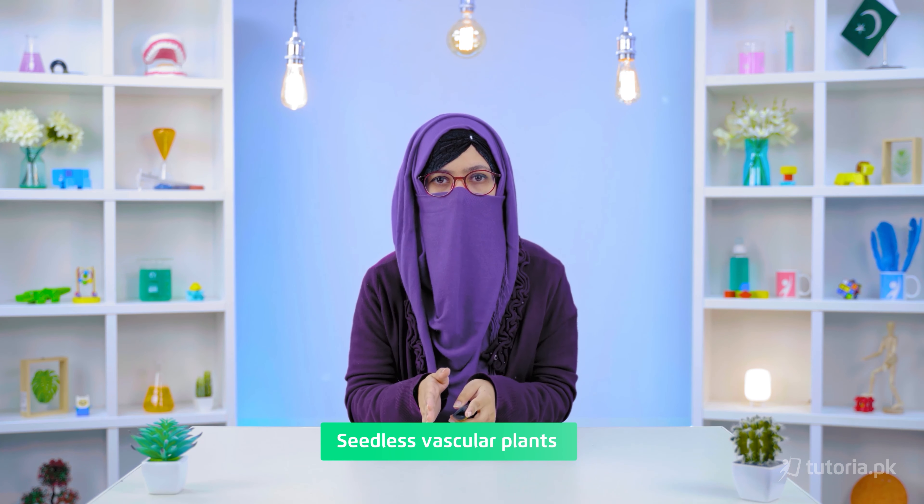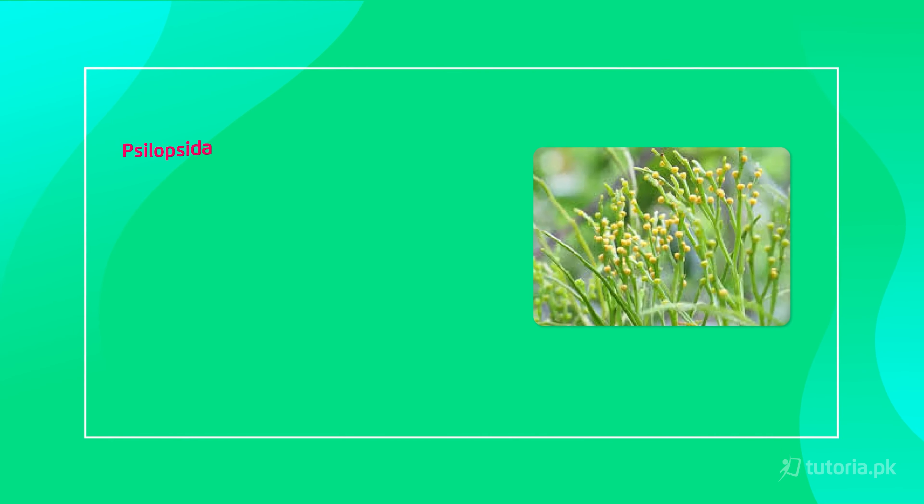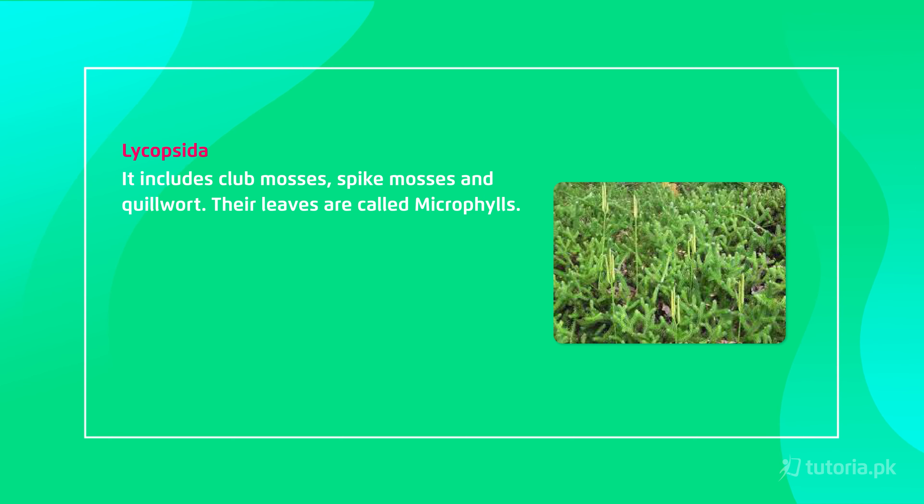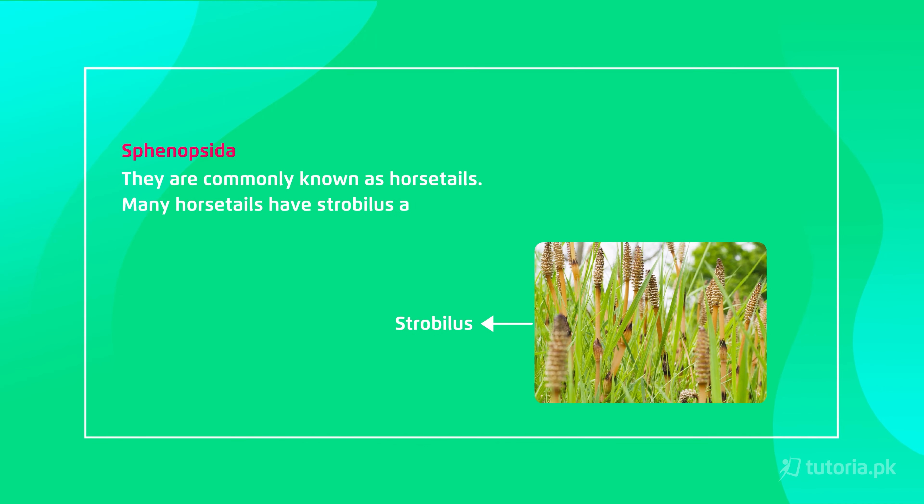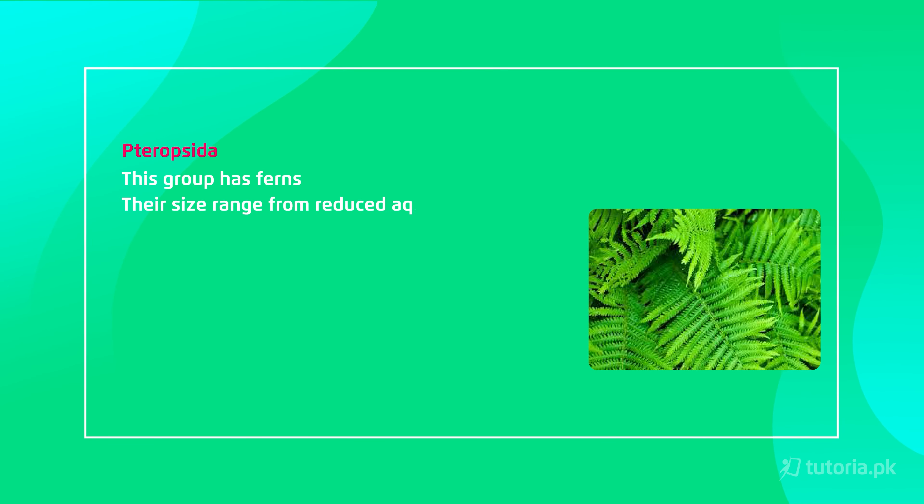Now let's talk about seedless vascular plants. Bryophytes were small in size because they had to take nutrients directly from the environment and were dependent on water. As plants evolved, they developed specialized tissues — xylem and phloem — which transport water and food throughout the plant. This is an adaptation to land, which is why vascular plants grew more successfully on land. These are called seedless vascular plants because they lack the ability to produce seeds. They include Zosterophyllopsida (whisk ferns), Lycopsida (club mosses, spike mosses, and quillworts), Sphenopsida (horsetails), and Pteropsida (ferns). Their size ranges from small plants upward.